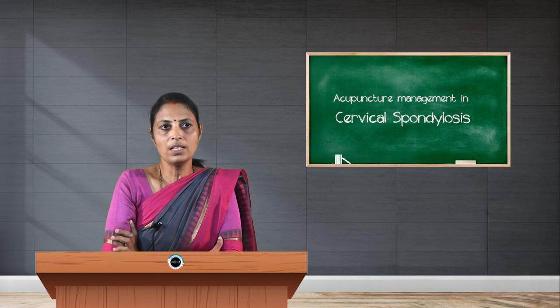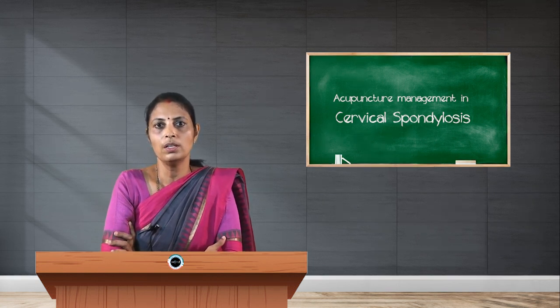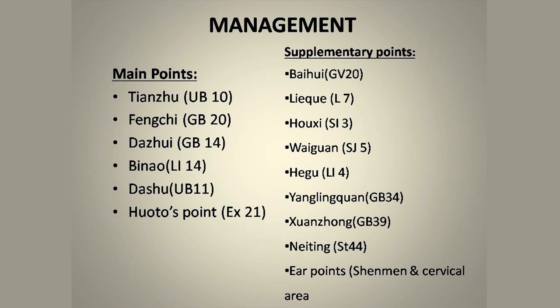Apart from TCM, there is a general acupuncture management for cervical spondylosis based on local pain and physiological evidence. Key points include: Tianzhu (UB 10), Feng Chi (GB 20), Dazhui (GV 14), Binnao (LI 14), Da Shu (UB 11), Huatuo points (Extra 21). Supplementary points include GV 20, LU 7, SI 3, SJ 5, LI 4, GB 34, GB 39, and Stomach 44. Ear acupuncture points such as ear Shenmen and the cervical area can also be used.